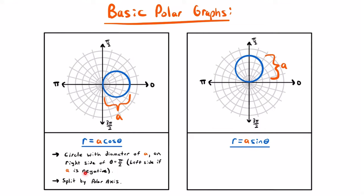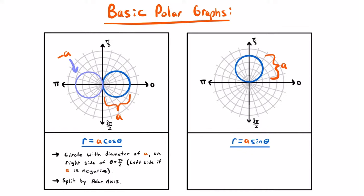For r equals a times sine theta, you're working with a circle that still has a diameter of a, but now it's on top of the polar axis and is split by the vertical axis. If that value of a is negative, the circle flips from being above the polar axis to being below it.